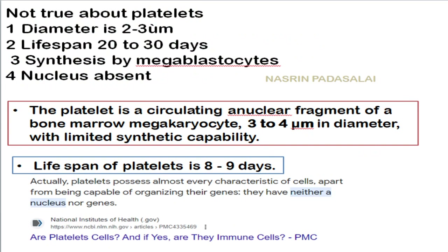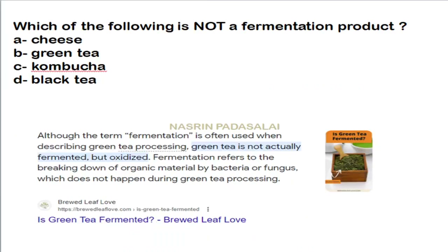Which statement about platelets is not true? The diameter of platelets ranges from 3 to 4 micrometers — correct. Lifespan of platelets is 20 to 30 days — this is the wrong statement, because the actual lifespan is 8 to 9 days. Platelets are produced from bone marrow megakaryocytes — correct. Nucleus is absent — correct. So the false statement is that platelet lifespan is 20 to 30 days.